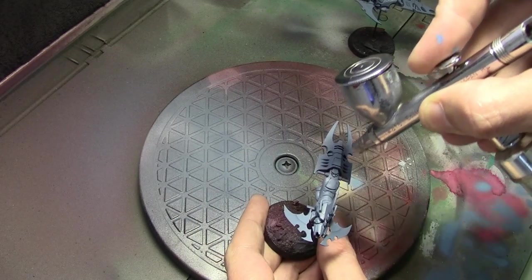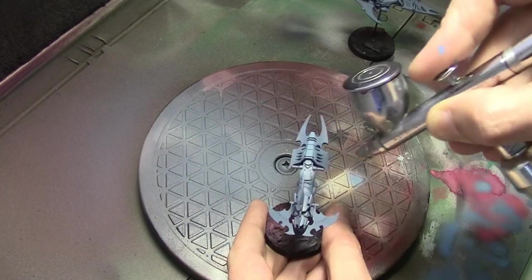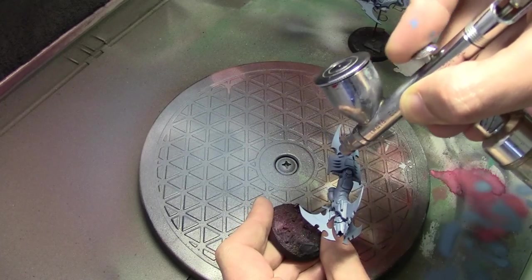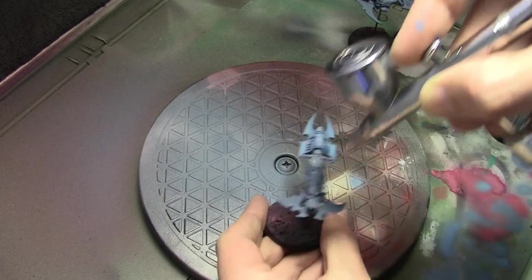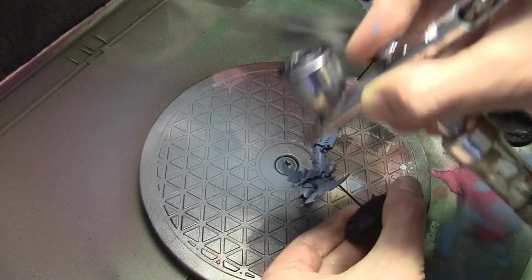Next I mixed in a little bit of Vallejo Game Color Magic Blue and just trying to highlight the bike a little bit concentrating on the top ridge and along the sides.